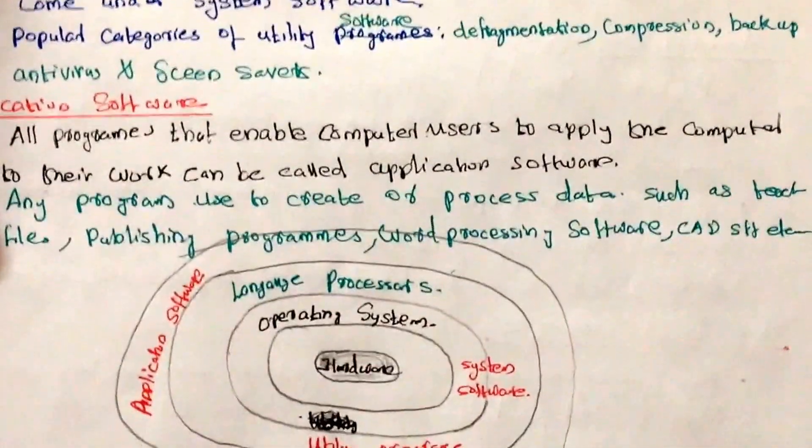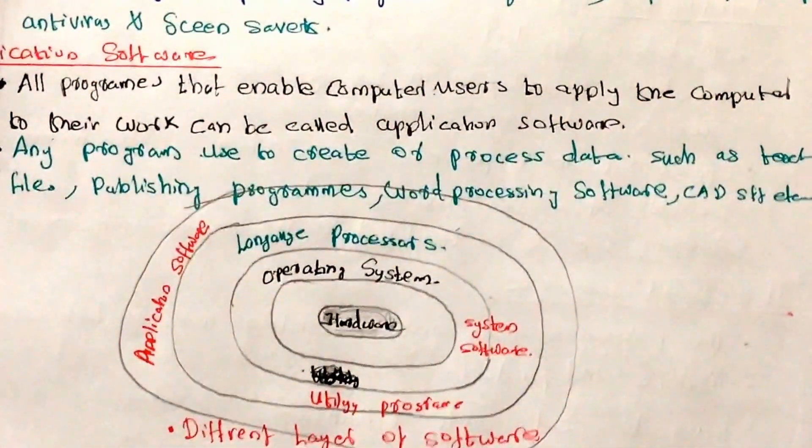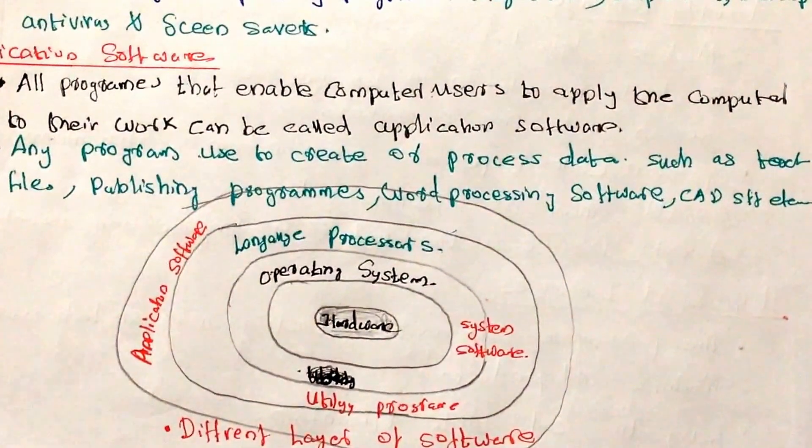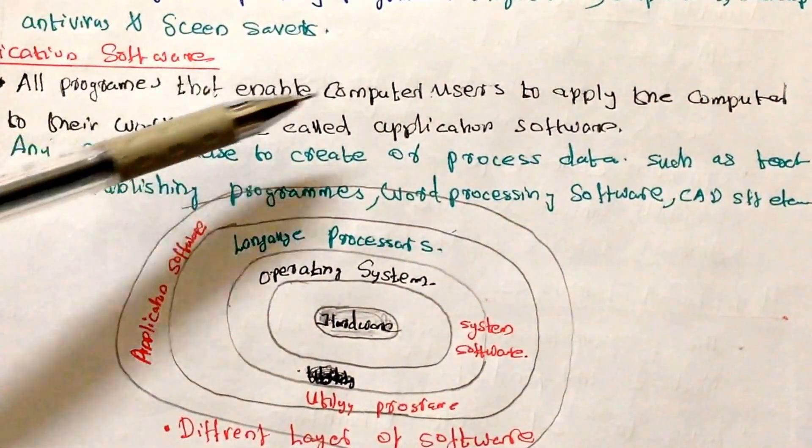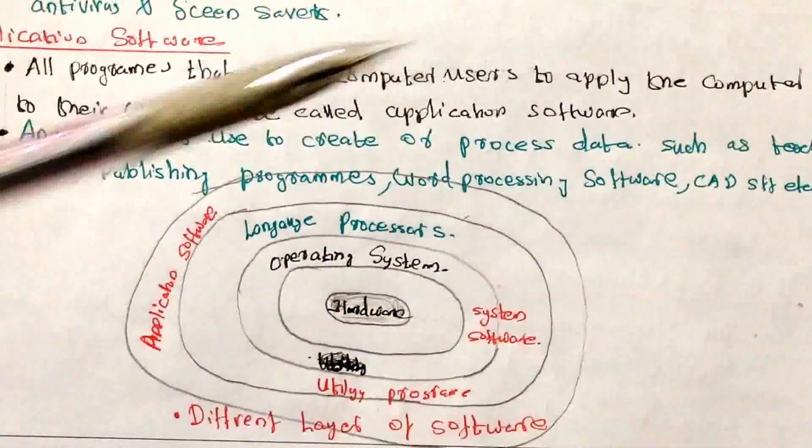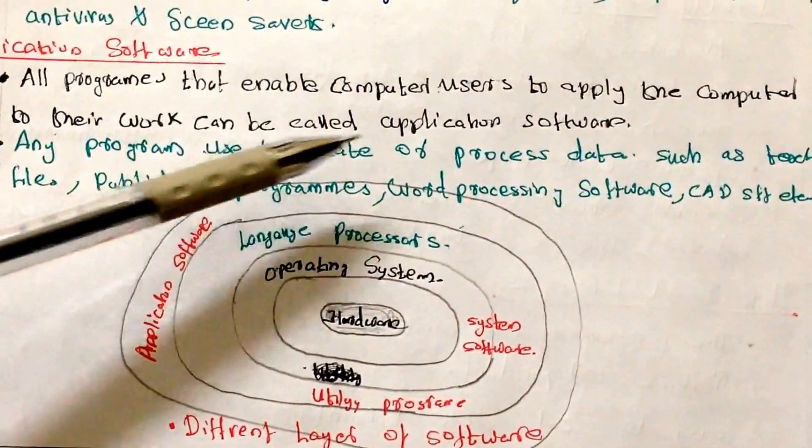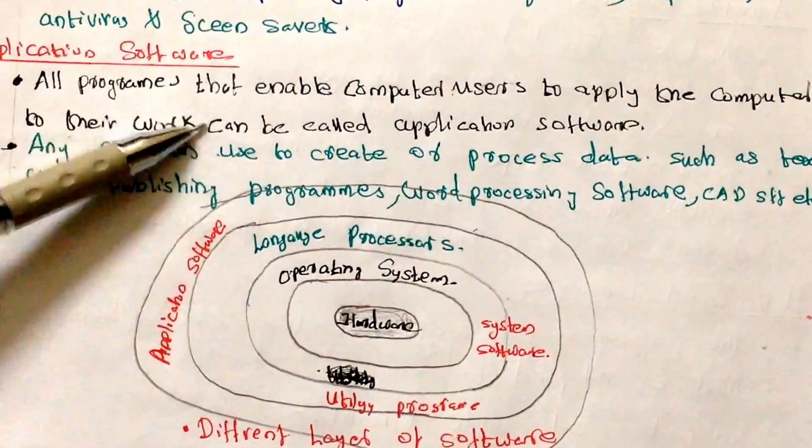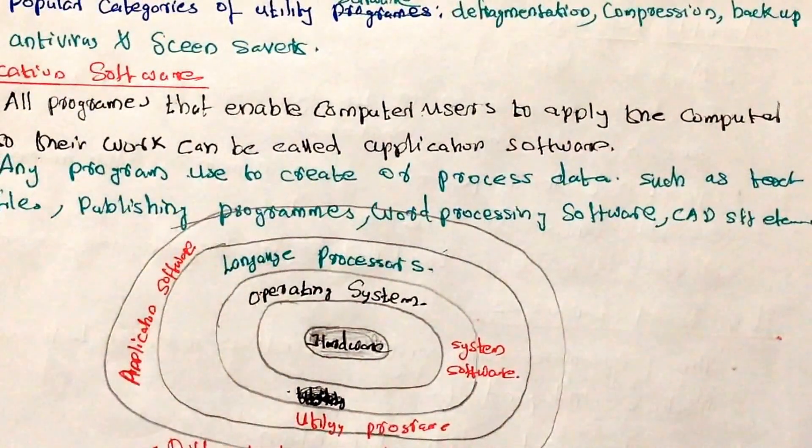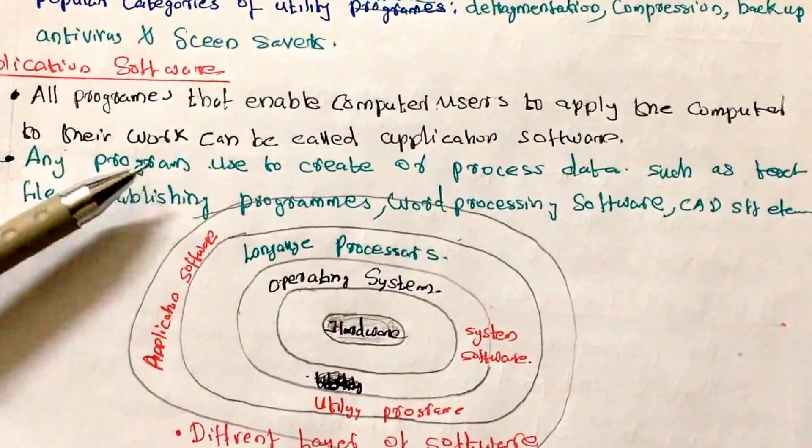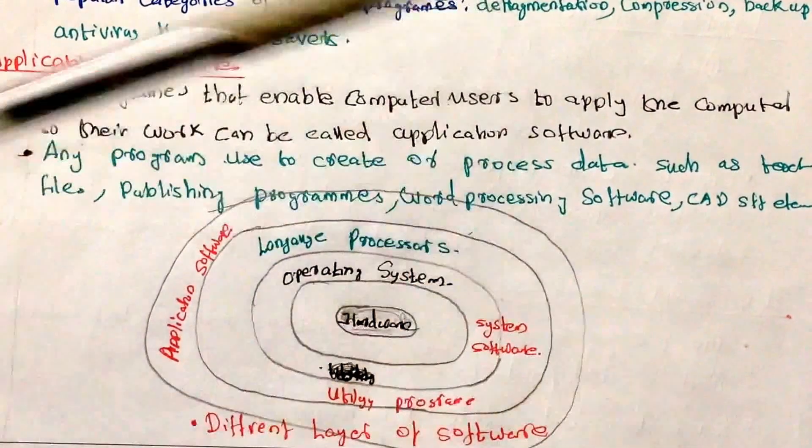Let's move on to application software. Application software is all programs that enable computer users to apply the computer to their work and can be called application software. So this is the software which helps the computer to work. And any program used to create or process data.